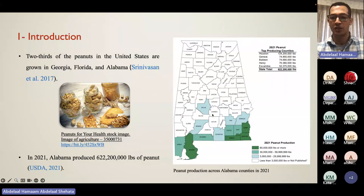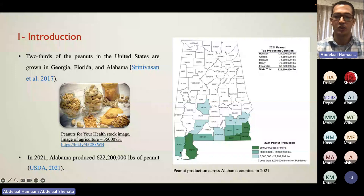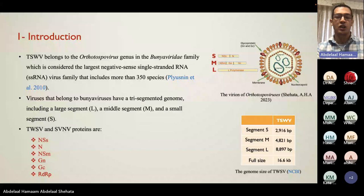As you can see on the map, in the south of Alabama we have the majority of the counties that plant peanut, and these counties that produce peanut most were used for sampling in our study.